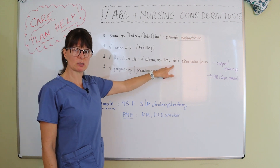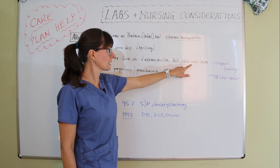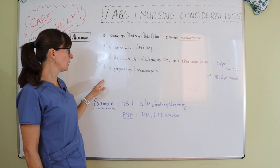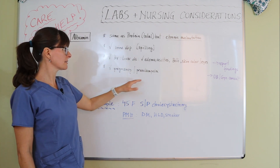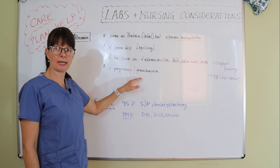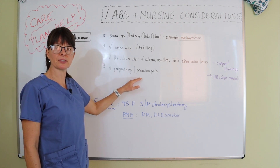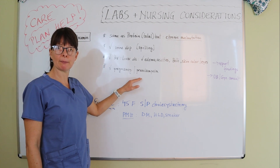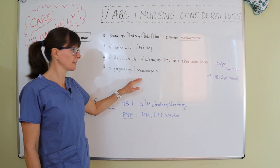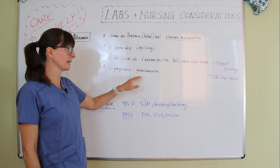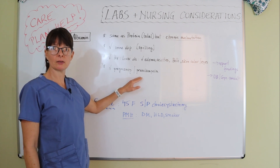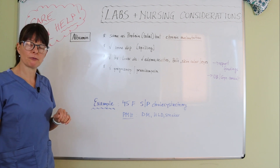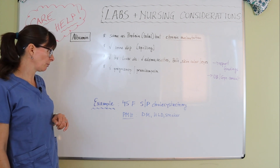If there's any history of liver disease, we should check all things related to chronic liver disease: edema, ascites, bilirubin level, skin color and eyes for jaundice. We should also check the patient for pregnancy and preeclampsia, noting that albumin can be low if the patient is spilling it in these conditions, requiring close monitoring.